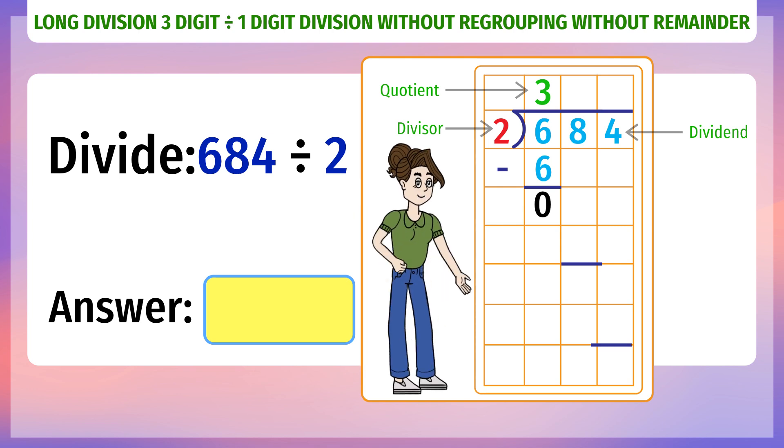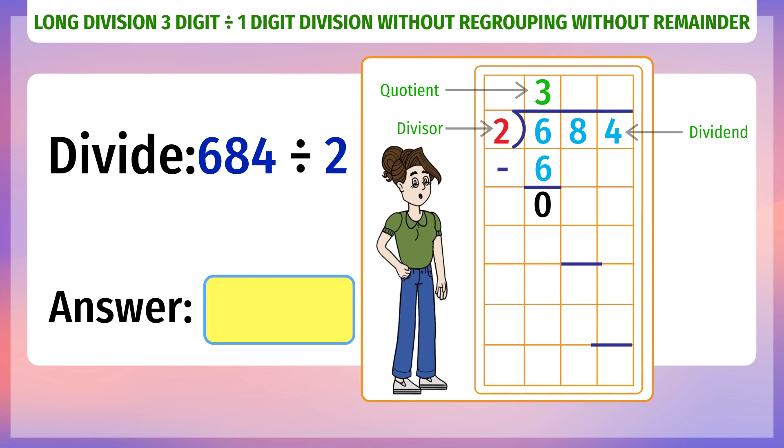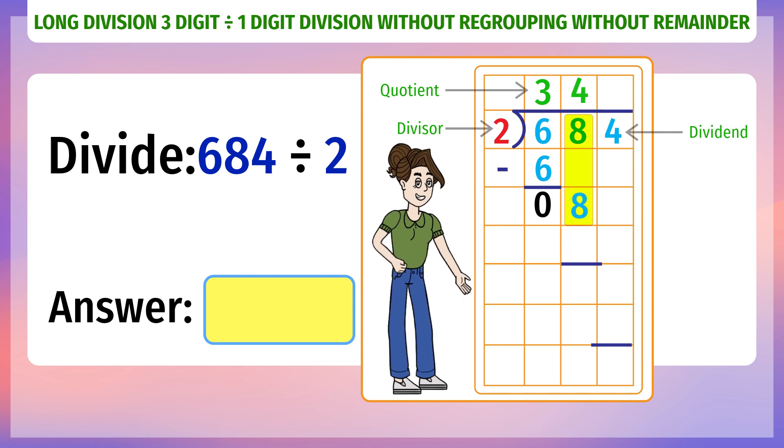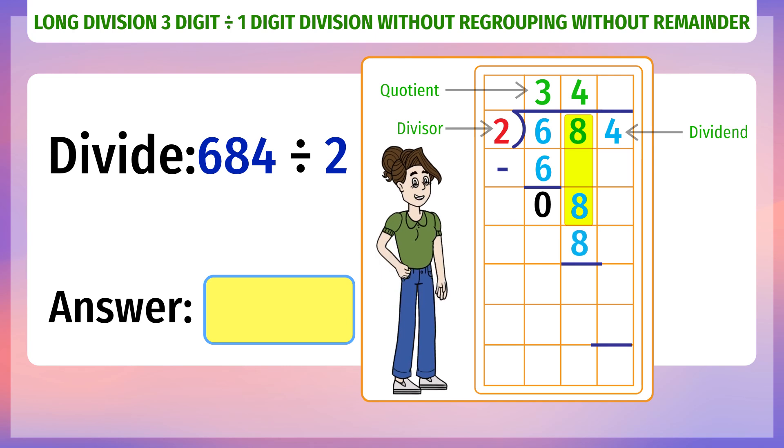Next digit of dividend, 8. 8 divided by 2 is 4. Write 4 in quotient space. Write 2 into 4, 8 below 8 of the divisor. Subtract 8 minus 8 to get 0.